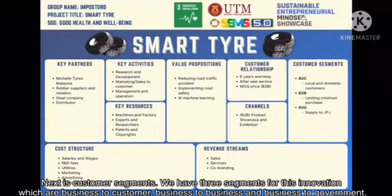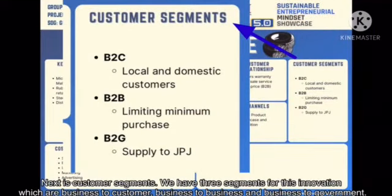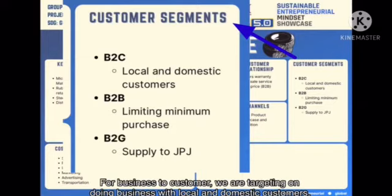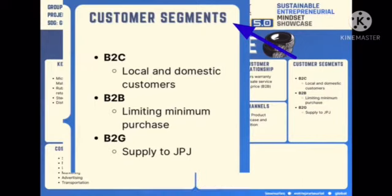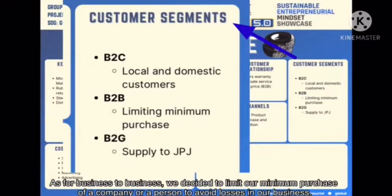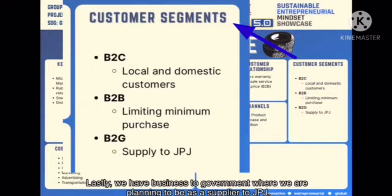Next is customer segments. We have 3 segments for this innovation: business to customer, business to business, and business to government. For business to customer, we are targeting local and domestic customers. As for business to business, we decided to set a minimum purchase limit for a company or person to avoid losses. Lastly, business to government, where we are planning to be a supplier to JPJ.